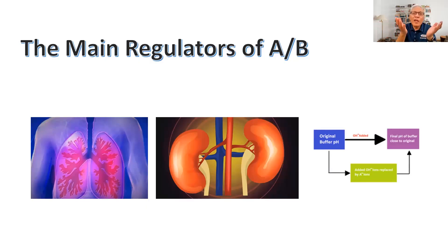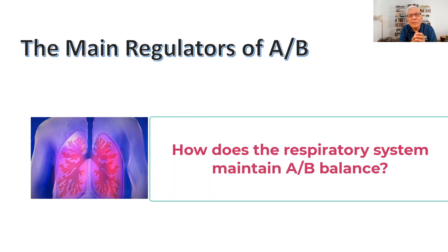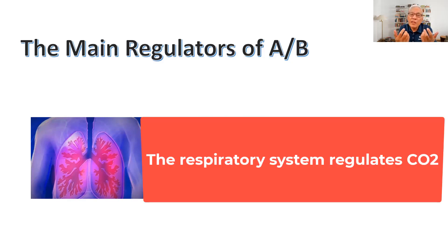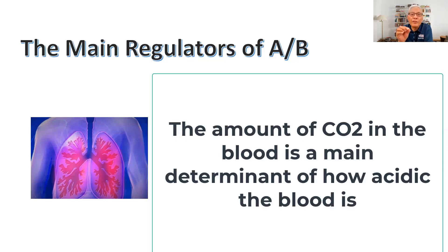You might be wondering how the respiratory system maintains or contributes to acid-base balance. The respiratory system is one of the regulators of carbon dioxide in the body. CO2, or the amount of carbon dioxide in the body, is a great determinant for maintaining the amount of acids in the body because CO2 is a potential acid.